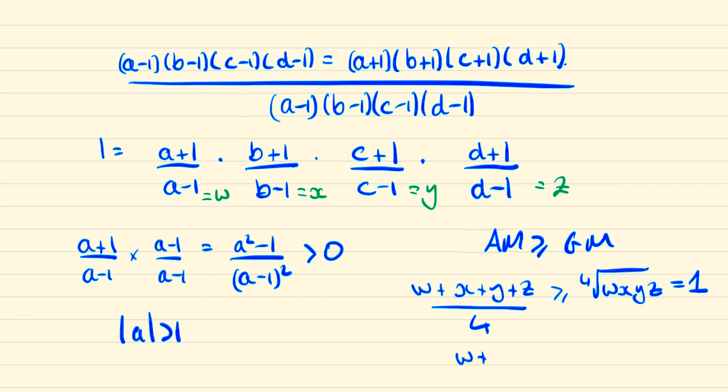But given that w, x, y and z are strictly positive and they cannot equal one, since if it equaled one then we'd be saying that d plus one is equal to d minus one which of course is impossible, we can therefore ignore the case when w plus x plus y plus z equals four and just say that this is strictly greater than four.